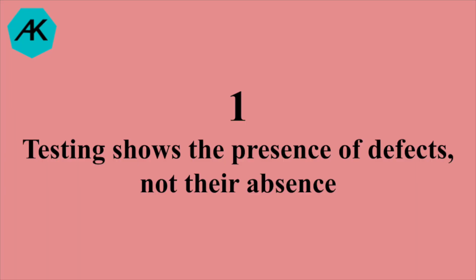The first principle is testing shows the presence of a defect, not their absence. When we do testing, we can show the defects, we can catch them and we can get them fixed. But if no defects are found during testing, that doesn't mean there are no defects in the software. Testing is not a proof of correctness.